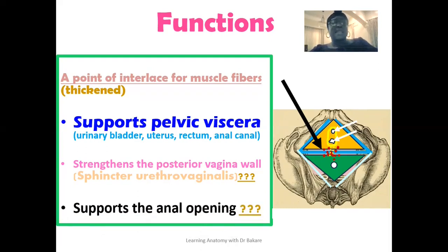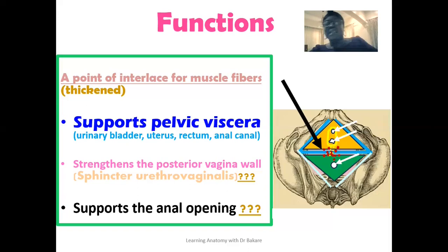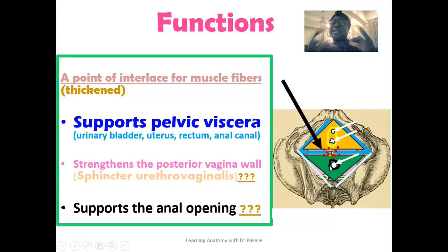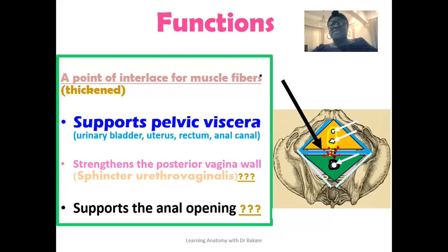The perineal body also helps support the anal opening. Within the anal triangle at the back, the anal canal opening is surrounded by the external anal sphincter, highlighted in black. This is a voluntary sphincter, and its fibers also contribute to the formation of the perineal body, highlighted in dotted black, thereby helping to support the opening of the anal canal.